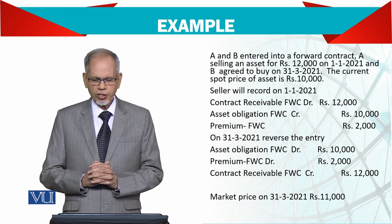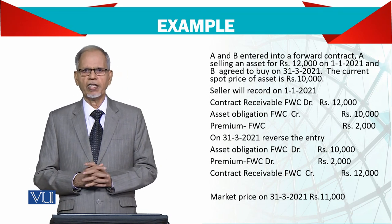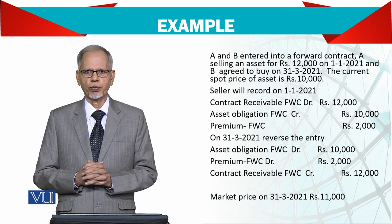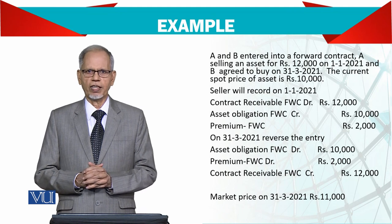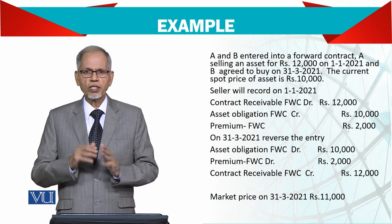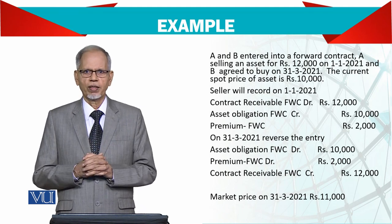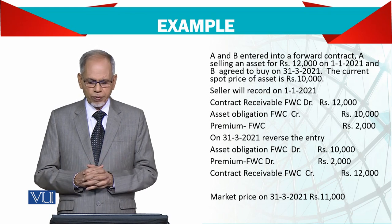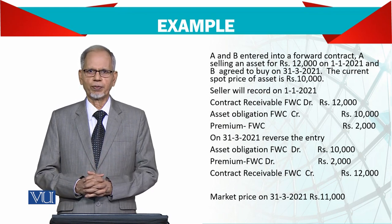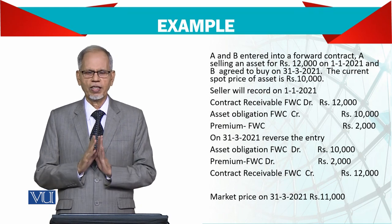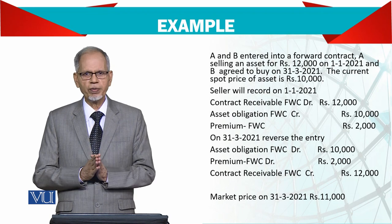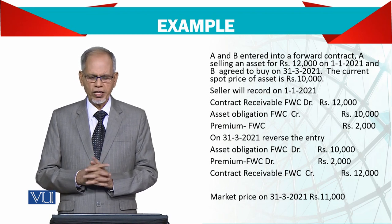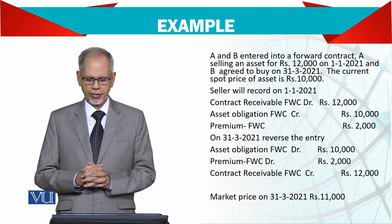यह asset obligation इसलिए है क्योंकि आपने ultimately इस receivables के against asset देना है। Interesting बात यह है कि asset आज की value 10,000 है — spot rate है 10,000। तो जो differential है — वो 2,000 का — आपने premium में credit करना है। January में शुरू में जब आप contract करेंगे आपको यह entry डालनी पड़ेगी।